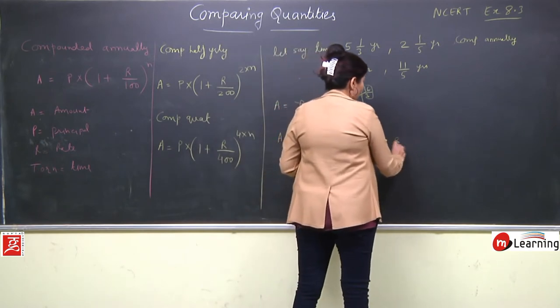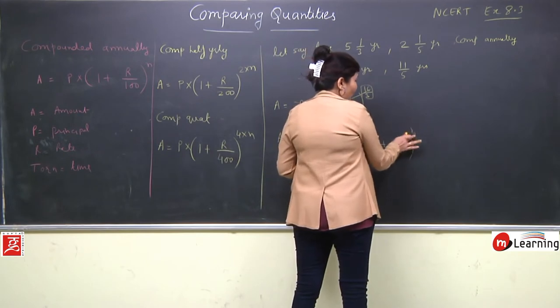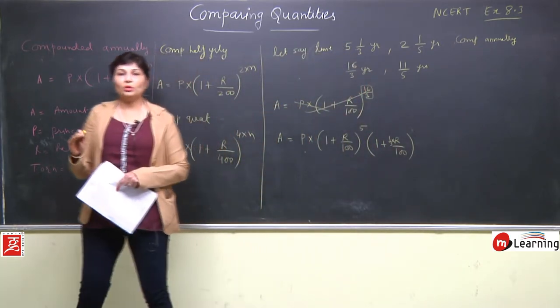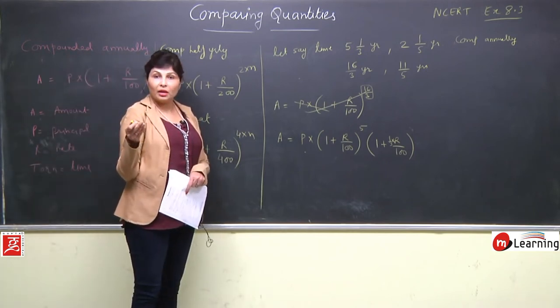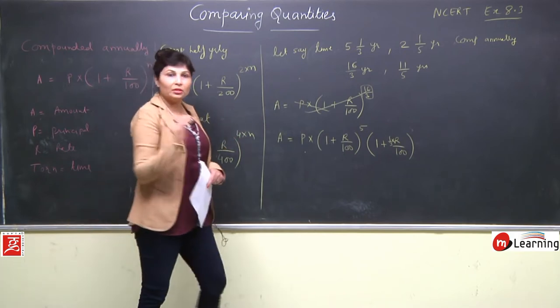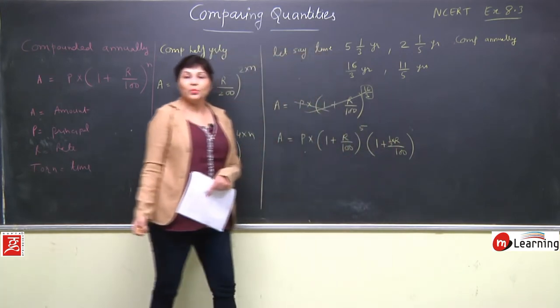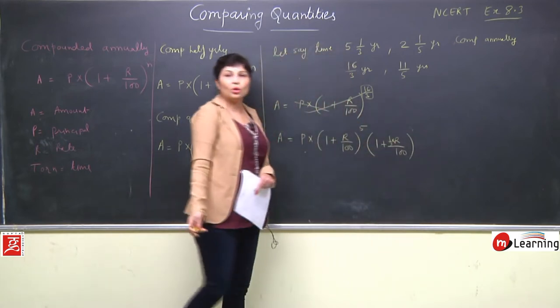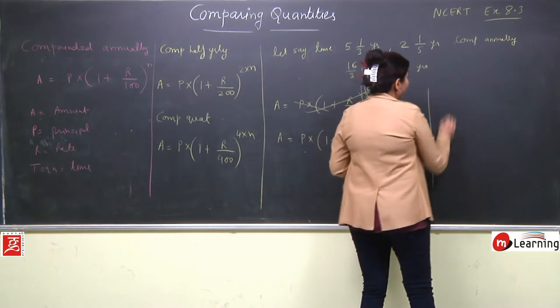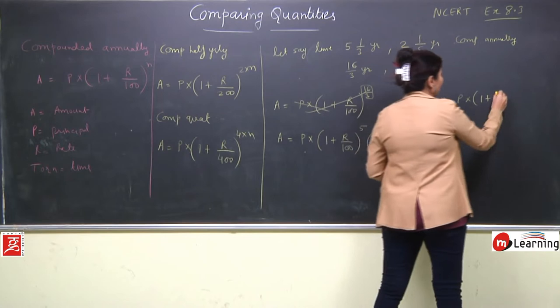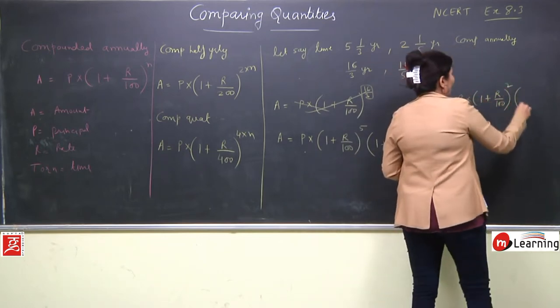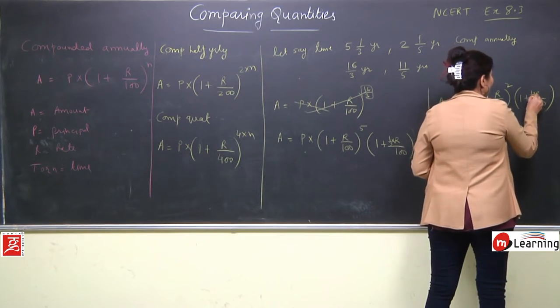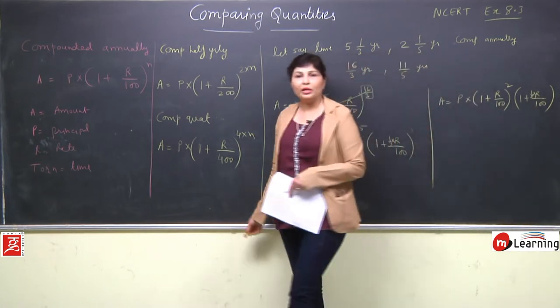The formula becomes: A = P(1 + r/100)^5 × (1 + r/300). We've divided time into two parts - the complete years in the first bracket, and the fractional part in the second where the fraction multiplies with the rate. This is an already proved formula, so we can use it as is. For 2 and 1/5 years, it's A = P(1 + r/100)^2 × (1 + r/500).